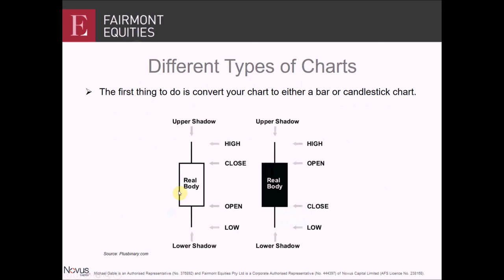The body can be very small — that is, the stock only traded slightly higher throughout the day — or it can be very large, which means that it saw sustained buying pressure all day. Now, these shadows, top and bottom, tell us where it traded throughout the day. Sometimes you don't get any shadows, sometimes they're very small, and sometimes they can be large. The dark candle on the right-hand side just means that the stock closed at a lower level than where it opened.